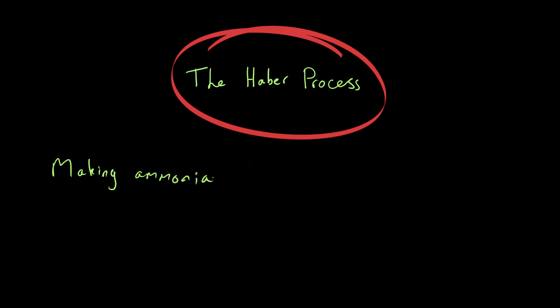So you might be familiar with it already, but the basic equation for the Haber Process is nitrogen plus hydrogen makes ammonia, which is NH₃. Notice it's reversible. All of these are gases. And in order to balance, we need 3H₂ and 2NH₃.